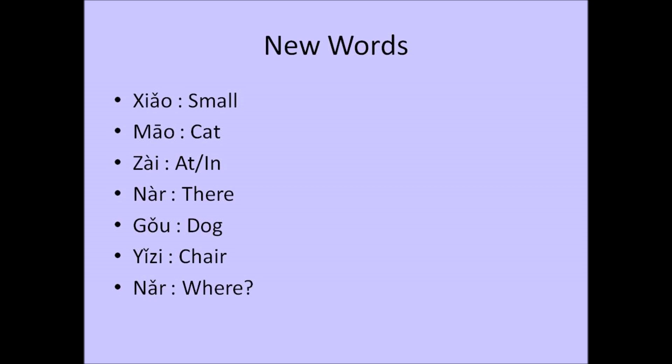狗, which means dog. 狗, 狗. 椅子, which means chair. 椅子, 椅子. 哪儿, which means where.